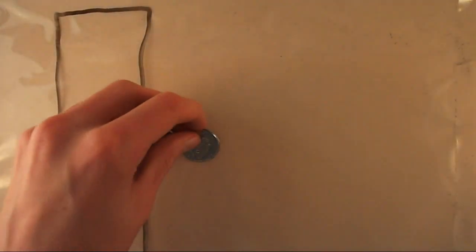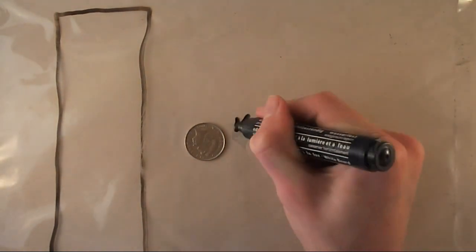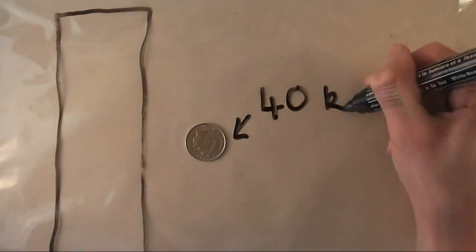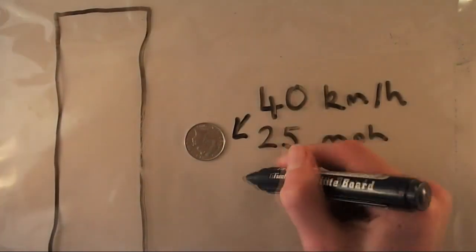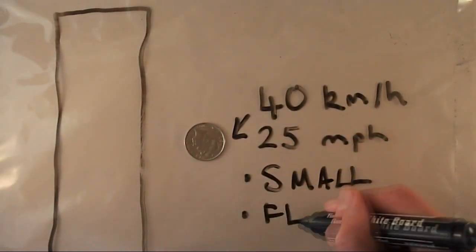If we take the scenario of it landing right below the Empire State Building and hitting a pedestrian, what would actually happen? The terminal velocity of the penny is around 40 kmph or around 25 mph. At this speed, the penny isn't going to do much.